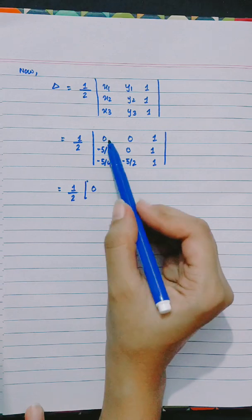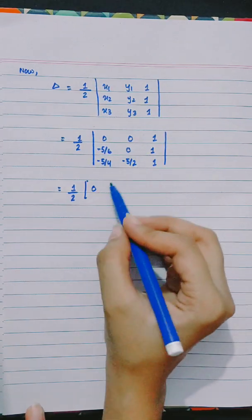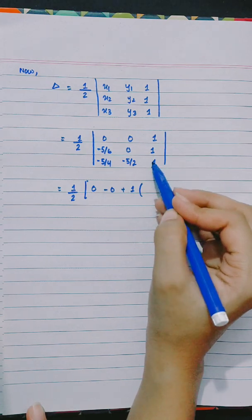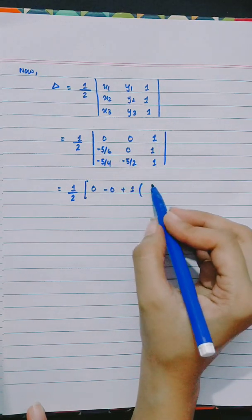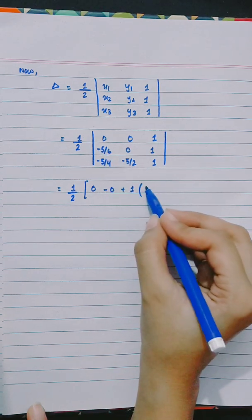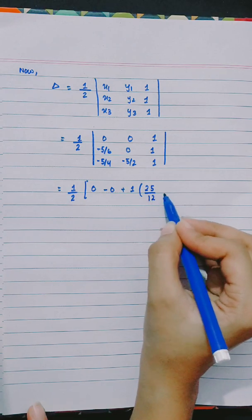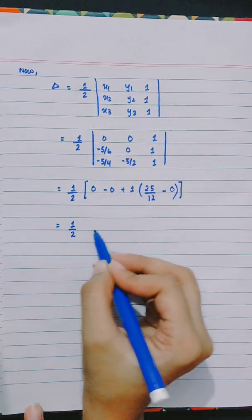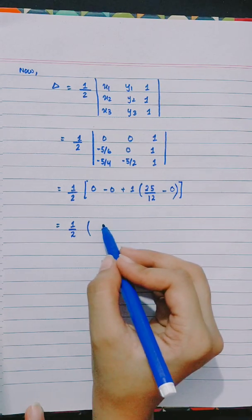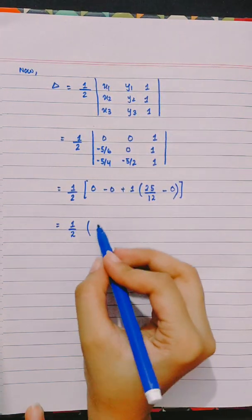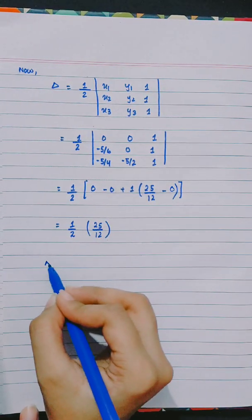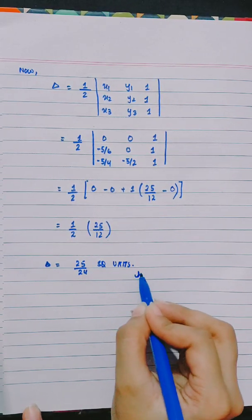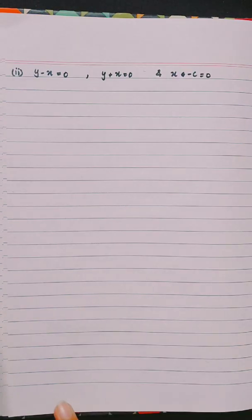Where 0, 0 appears, any value multiplied will be 0, so we can simplify. This gives minus 5 by 6 into minus 5 by 2, which is 25 by 12. Taking half of 25 by 12 gives 25 divided by 24 square units. Similarly, part 2 will be solved like this.